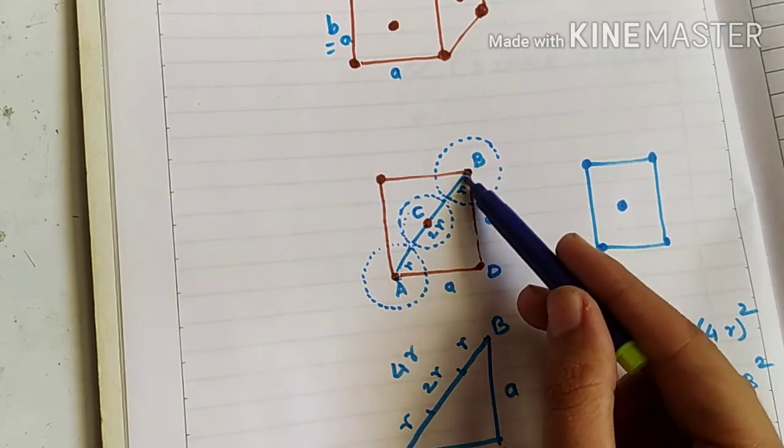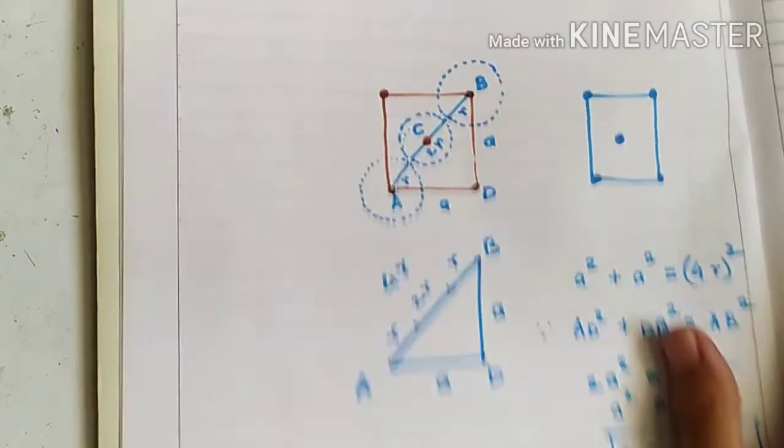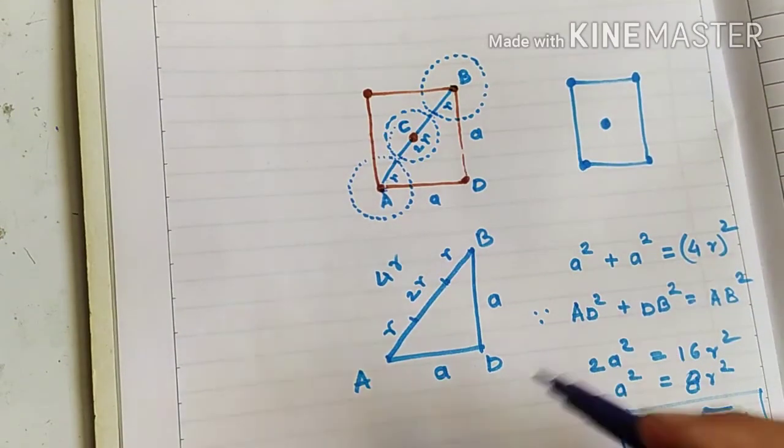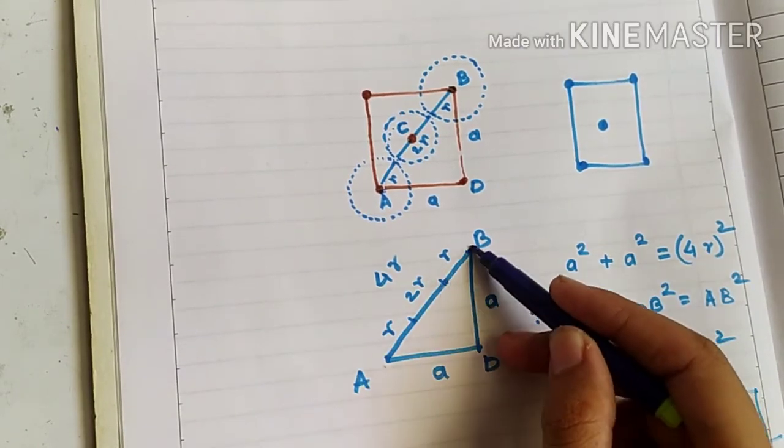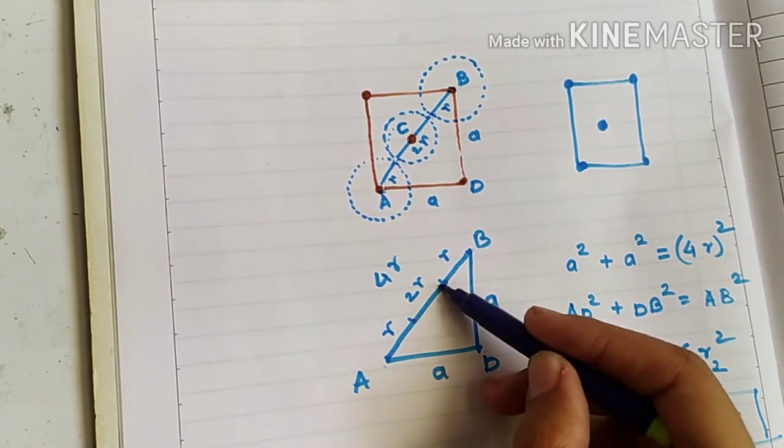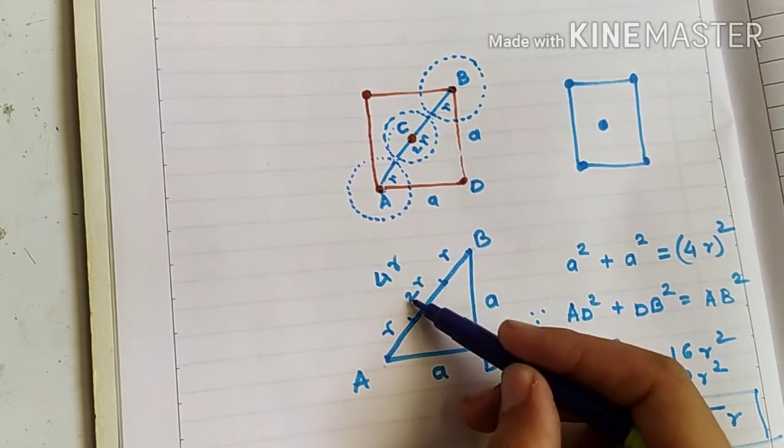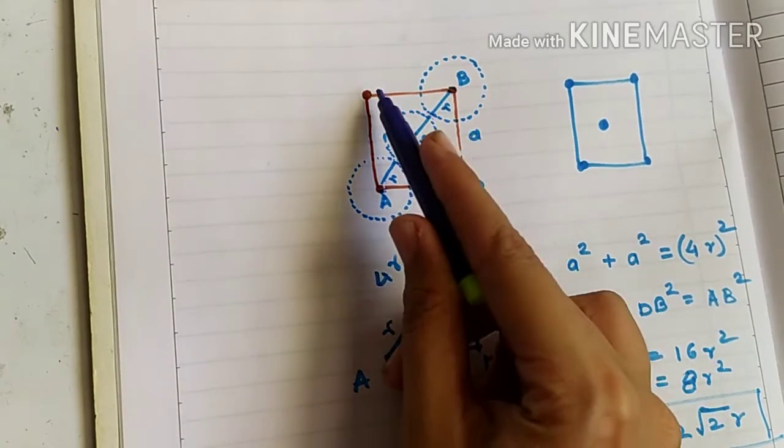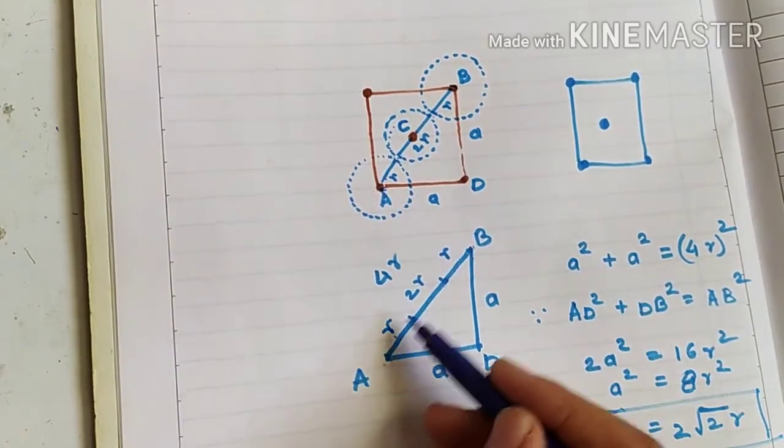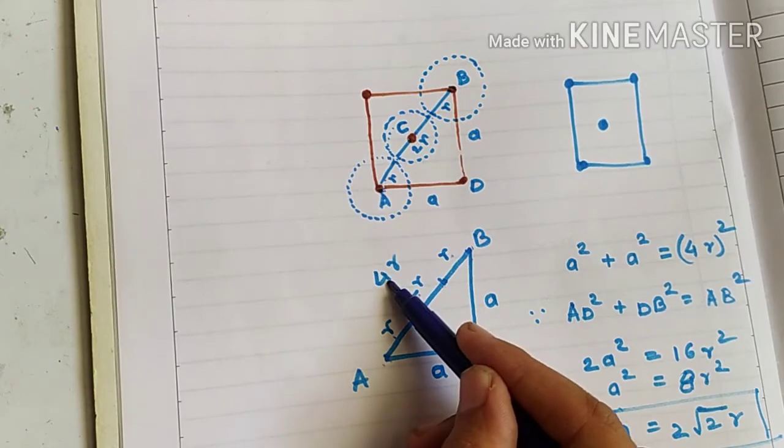We can just separately look at this triangle. So what do we have here is radius of atom a, radius of atom b and radius of the combined atom c. So two r. So the total length of this diagonal, total length of this diagonal becomes r plus r plus 2r, that is 4r.